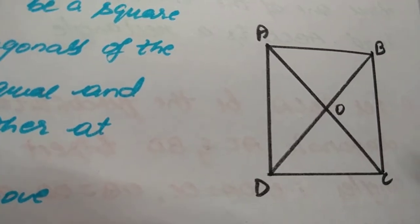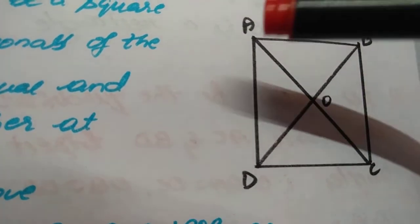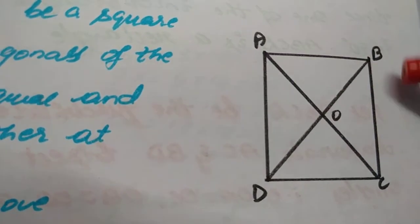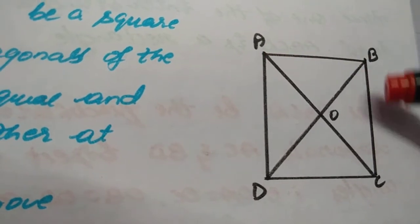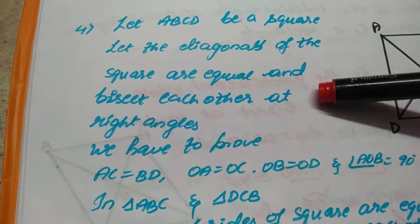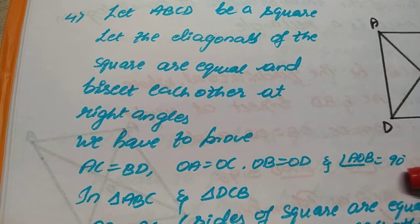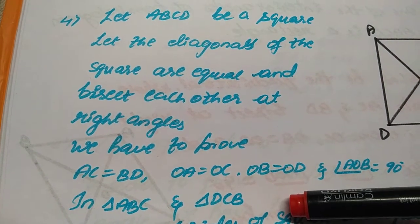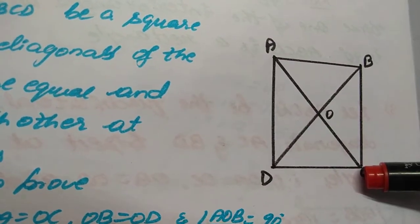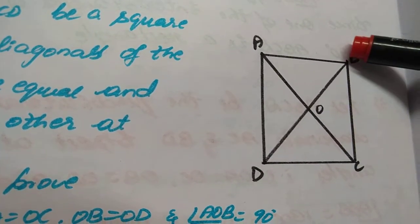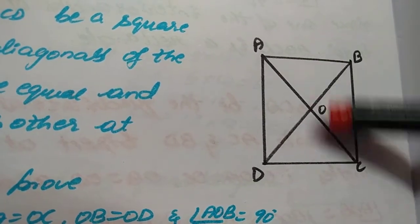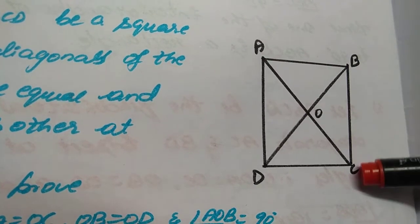Now first, what I know about the square I am going to write here. All the sides are equal, that is AB equal to BC equal to CD equal to DA. In the square, all the sides are equal and all the angles are 90 degrees. Those are the known facts. Now I will consider triangle ABC and triangle DCB. AB equal to CD because sides of the square are equal. Next, BC equal to BC, this is the common side.